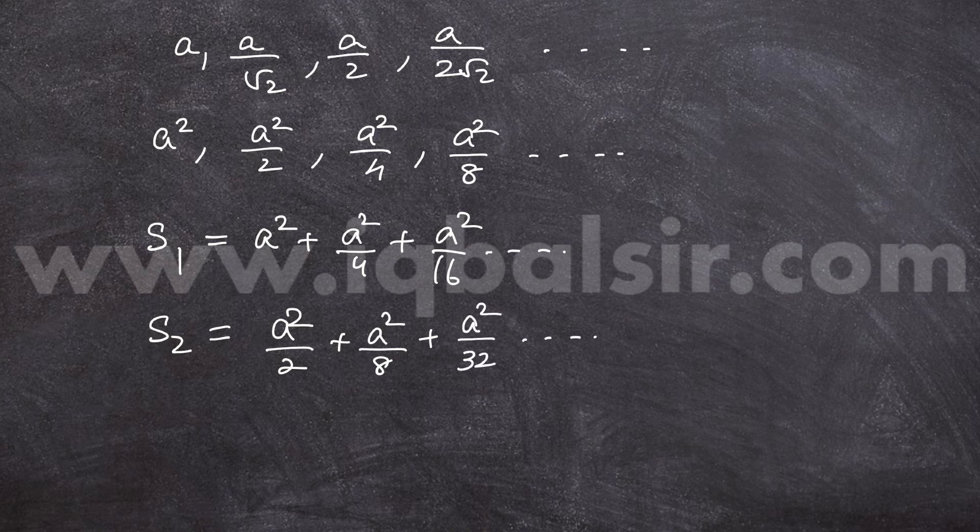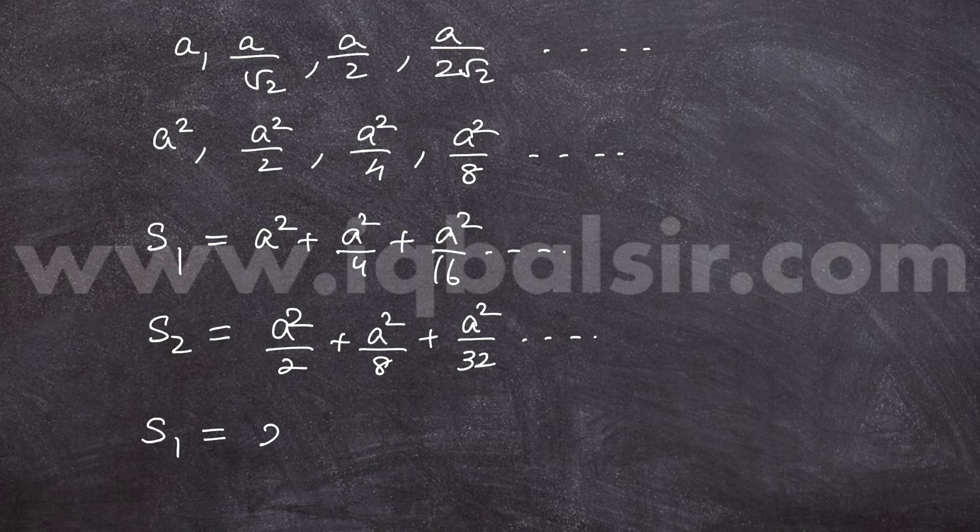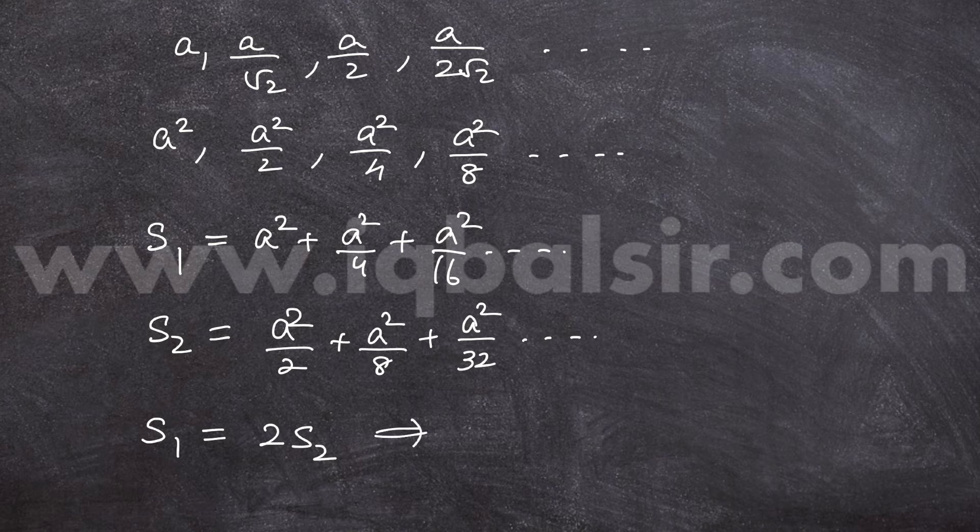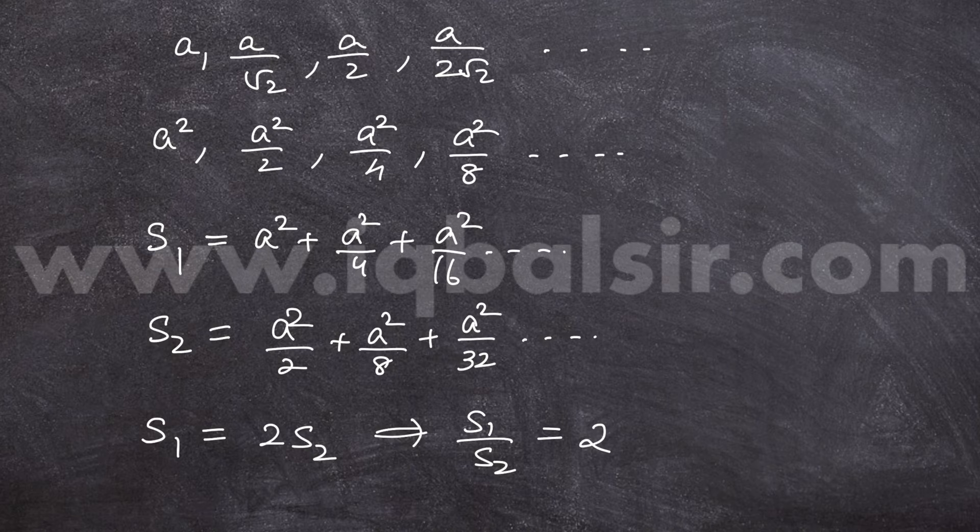So, it is very clear that S1 is 2 times S2. It is very obvious that S1 is equal to S2. So, S1 by S2 ratio is equal to 2. The answer is option A.